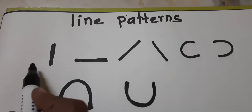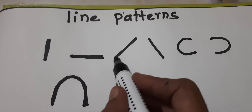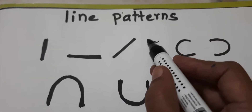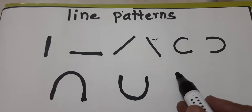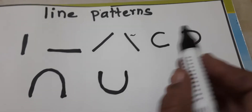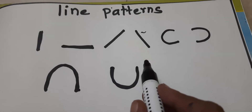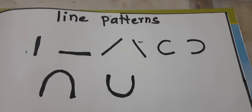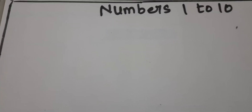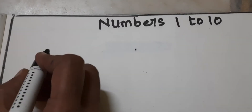Standing line, sleeping line, slanting up, slanting down. C, inverted C. Down curve, up curve. Next, how to practice numbers.